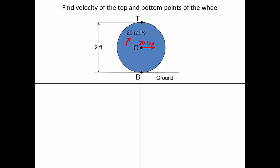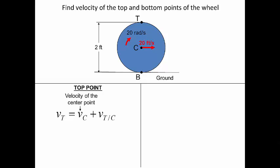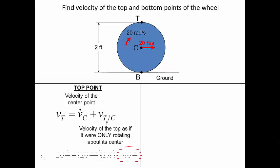What if we wanted to find the velocity of the top and bottom points of the wheel? For the top point, we use the relative motion analysis equation: the velocity of the top equals the velocity of the center, plus the velocity of the top from the perspective of the center. The velocity of C is the translation, and the rotational component is 20 radians per second times 1 foot, giving a total of 40 feet per second at the top.